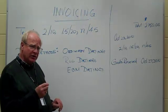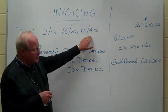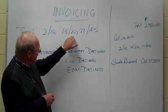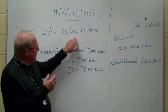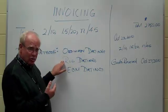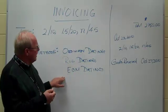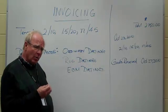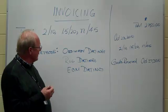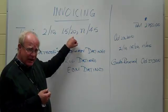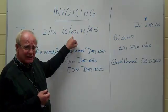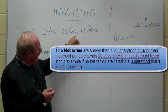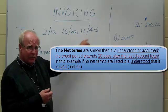One more thing you need to know: sometimes the net figure is missing, so it just says 2/10, 1.5/20 and then ROG or EOM, but no net figure. If that happens, it's always assumed that the credit period is extended by exactly 20 days beyond the last discount period. So if the net figure were not written at all here, it would be understood to be net 40.